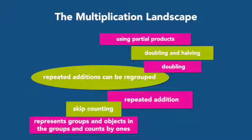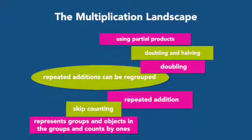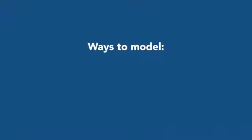Also on the landscape, when children start thinking of doubling — I know that 1 fifteen is 15, so 2 fifteens would be double. I could go to 4 fifteens right away because that would be double 2 fifteens, or 8 fifteens because that would be double 4 fifteens. I'm not skip counting any longer, I'm doubling. This leads very nicely into a representation on a ratio table, which high school teachers love because it connects to functions and linear functions — the ratio table is an important model for algebra.